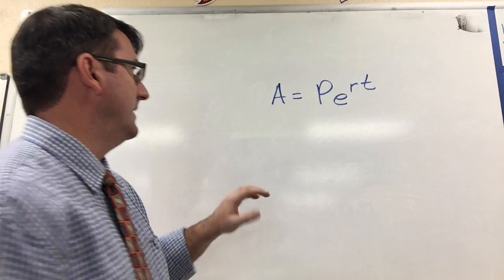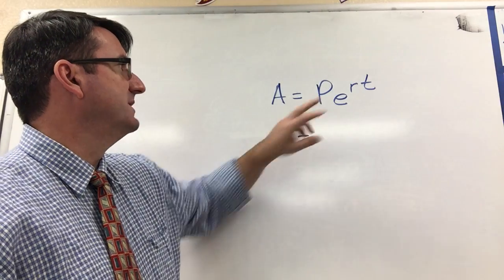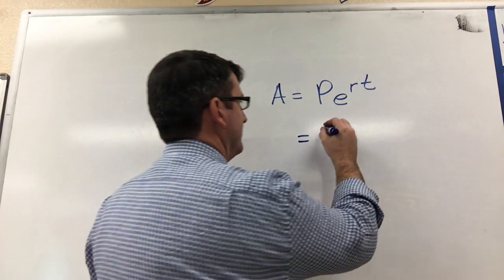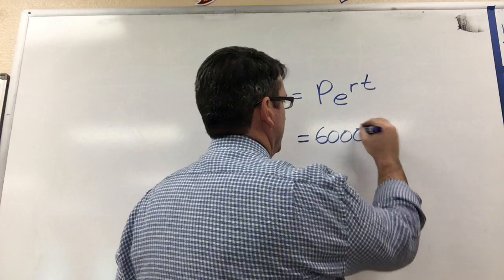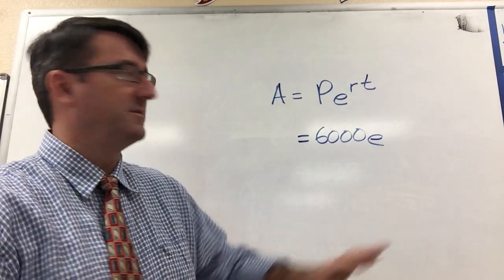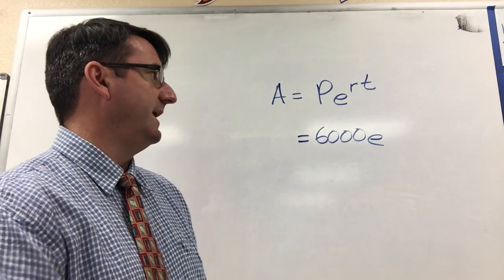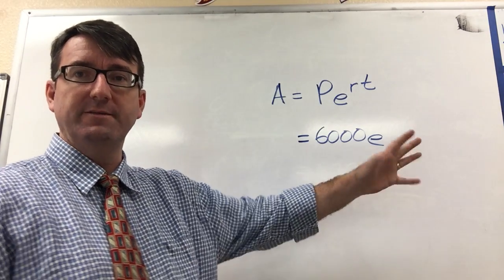Alright, so in this case, our principal is $6,000. And E is just E - E is a constant. We don't have to plug in anything for E. It's about 2.718 and your calculator knows that, so just leave it as E.